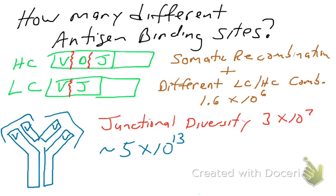That is very high. Although in theory it's observed that one person never seems to get that high, it has been observed that about 10 to the 9th possible combinations is how many antigen binding sites one person can make. That's still a pretty big number. So that's the role of junctional diversity in generating antibody diversity.